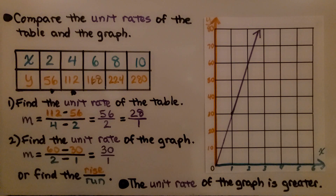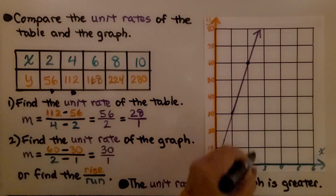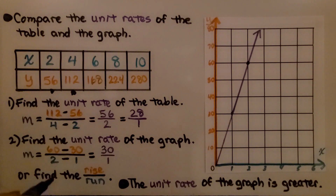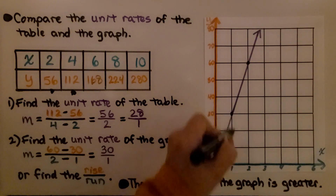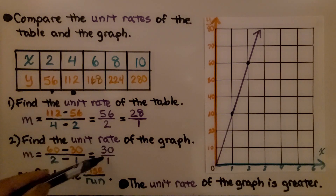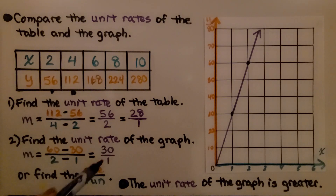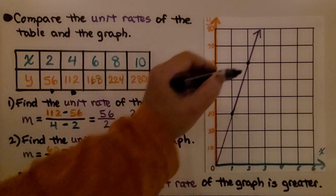Now we find the unit rate of the graph. We pick two points: the point (2, 60) and the point (1, 30). We calculate 60 minus 30 over 2 minus 1, and we get 30 over 1 — a denominator of 1. It would also be easy to pick two nearby points and find the rise over the run.